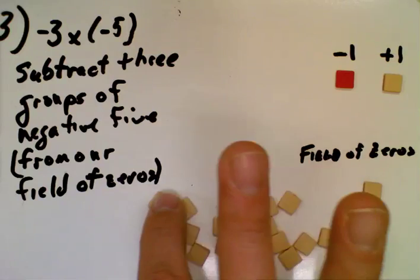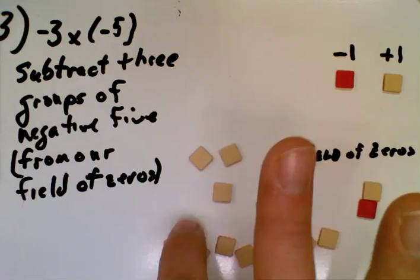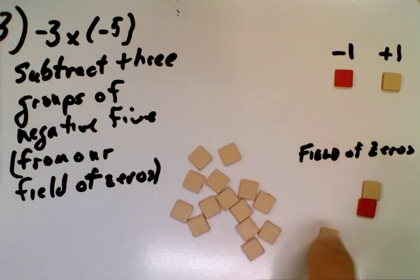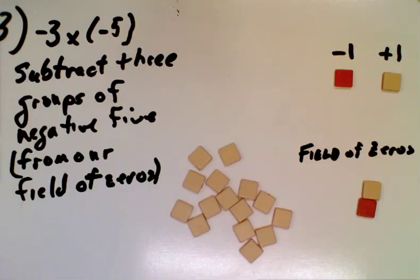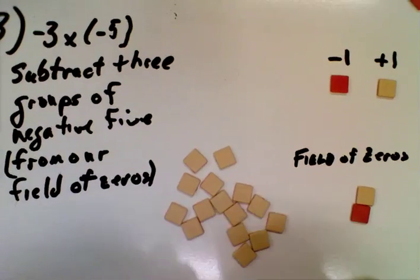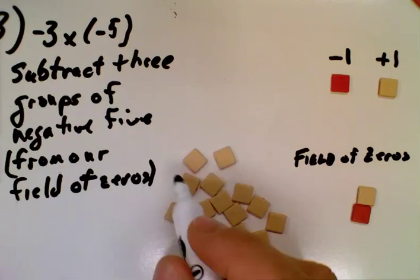Here's what we have left. We have 1, 2, 3, 4, 5, 6, 7, 8, 9, 10, 11, 12, 13, 14, 15, as we would expect, positive 15 tiles there.